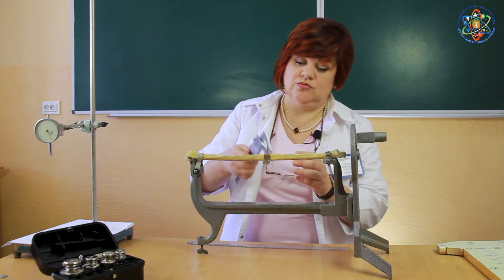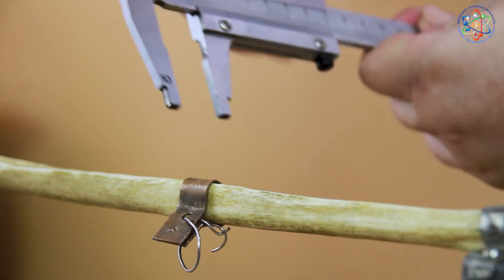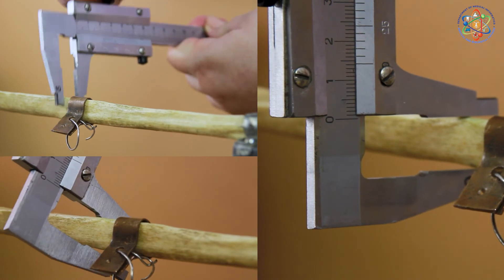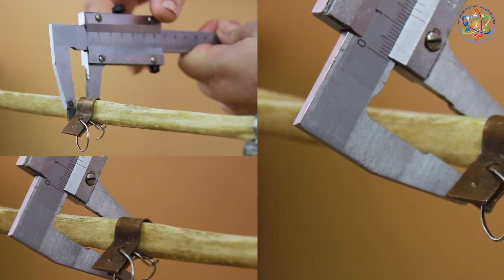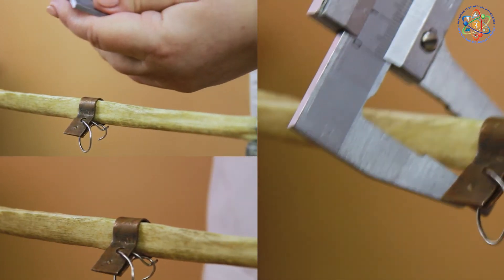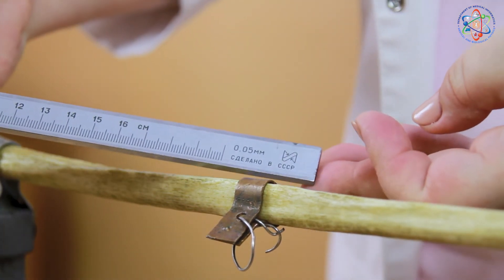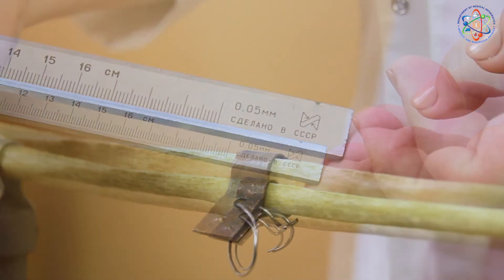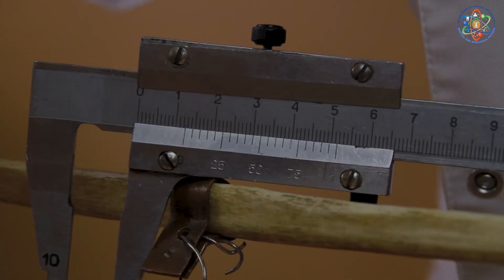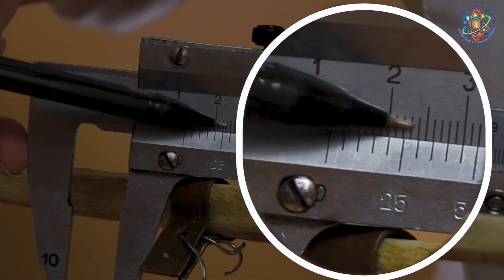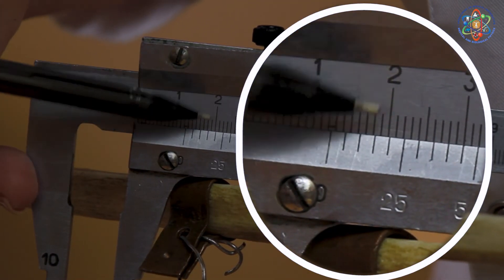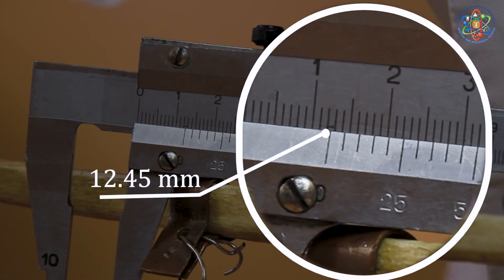Now let's measure the thickness of the bone in three sections with the help of a vernier's caliper. The unit value of the caliper is 0.5 mm. In the horizontal section, the thickness of the bone is 12.45 mm.